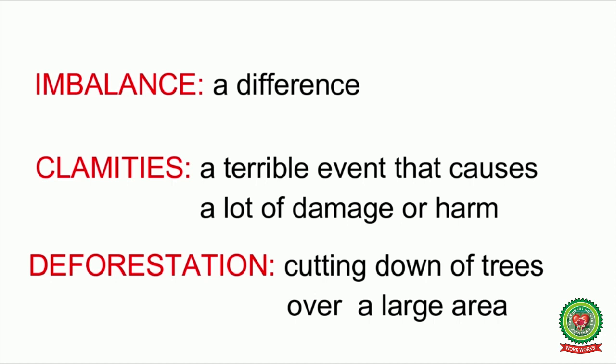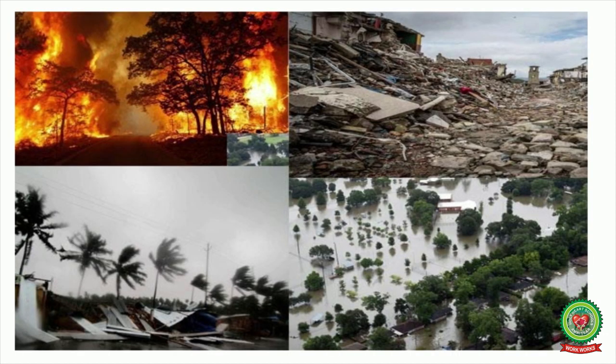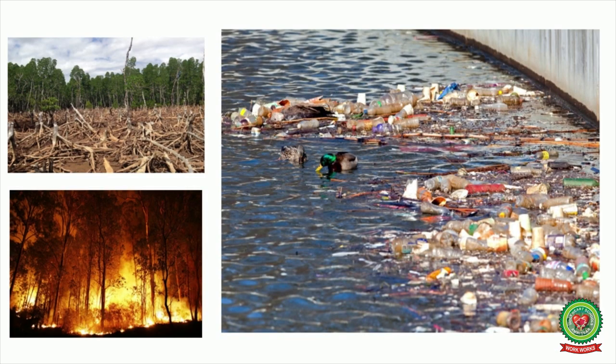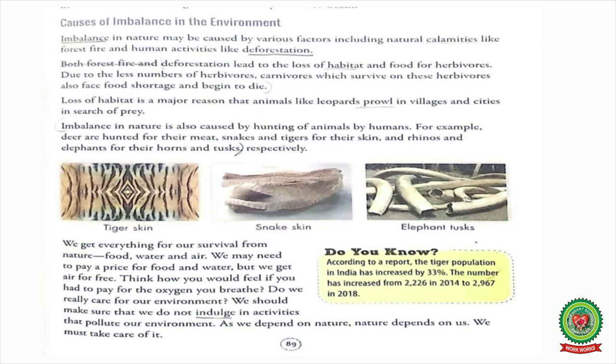The main causes of imbalance in nature are natural calamities and human activities. Both forest fire and deforestation lead to the loss of habitat and food for herbivores. Due to the fewer number of herbivores, carnivores which survive on these herbivores also face food shortage and begin to die.